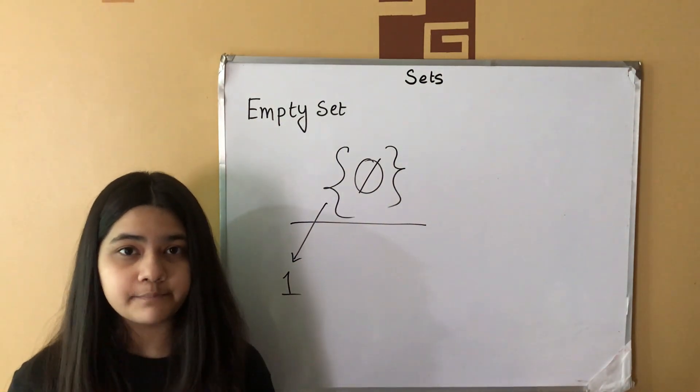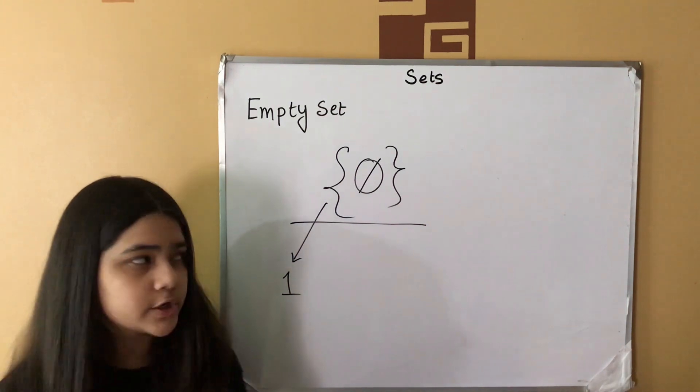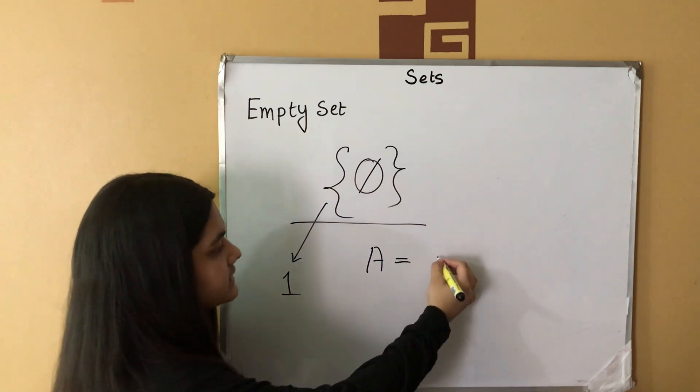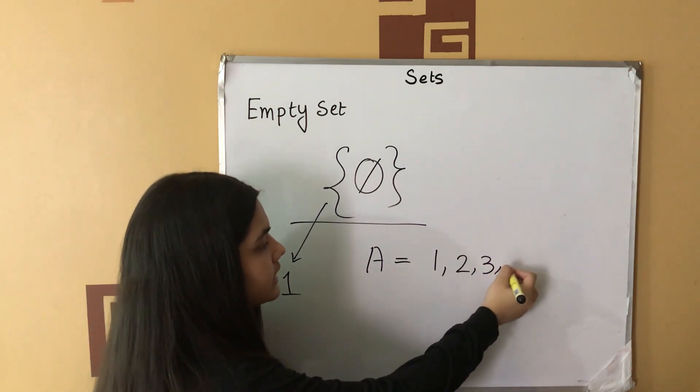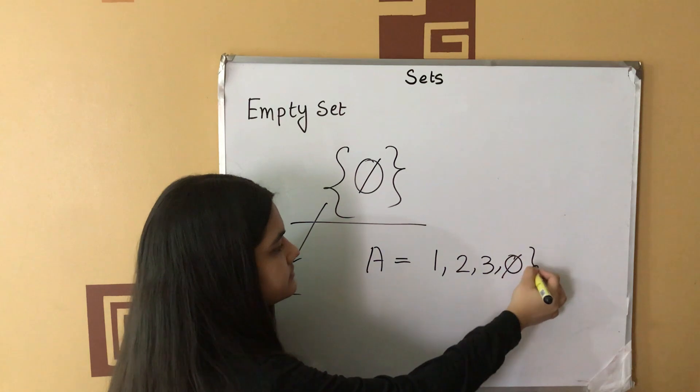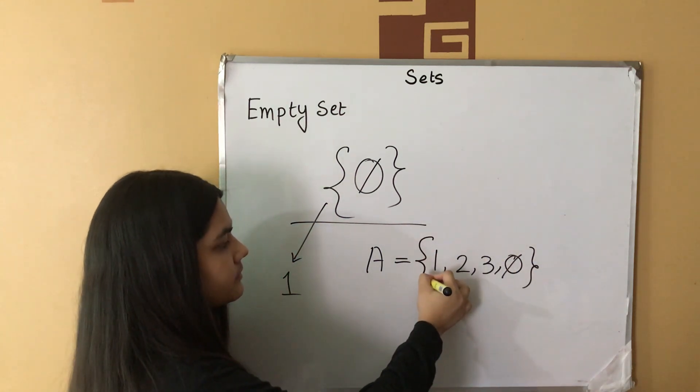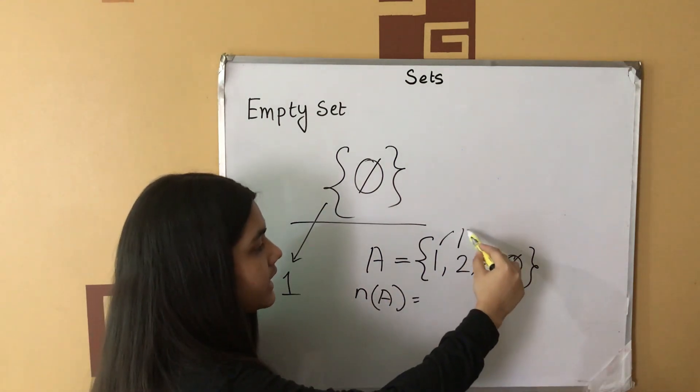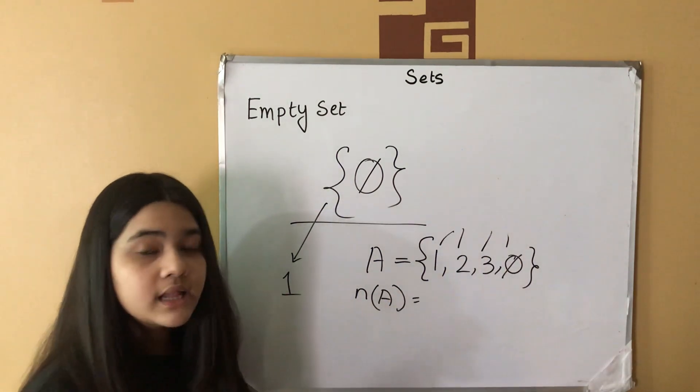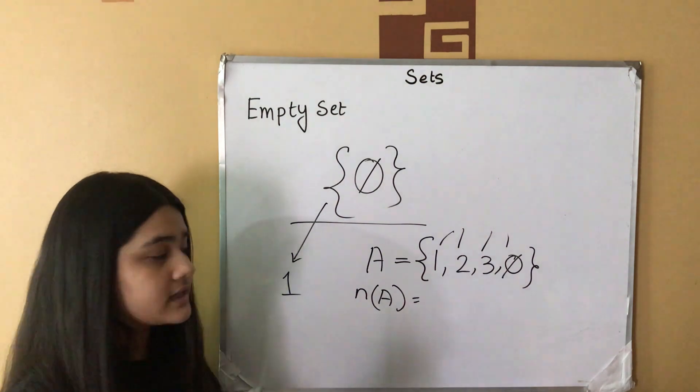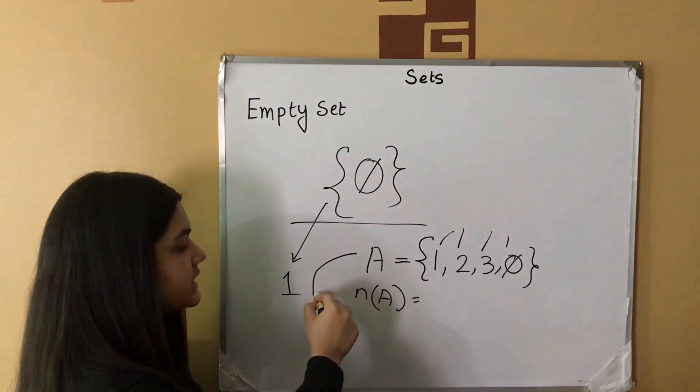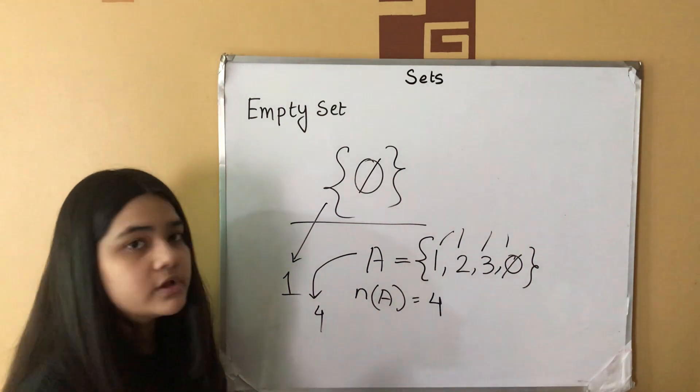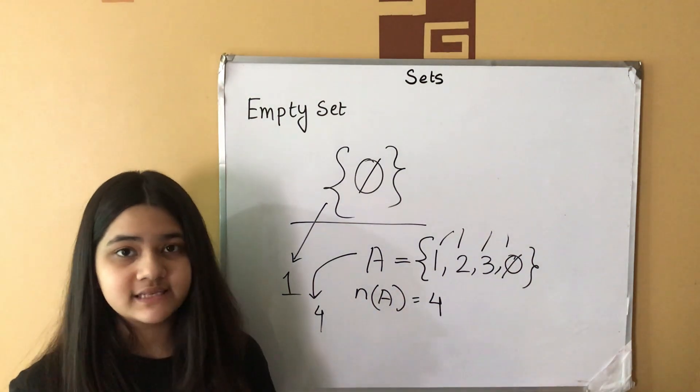Let's look at another example to make this a bit more clear. Suppose this is set A and it contains the elements 1, 2, 3 and empty set. The size of set A will be 4. We are counting the other elements as well as the empty set as the elements of set A. So, the number of elements in set A will be 4. Hope this makes sense.